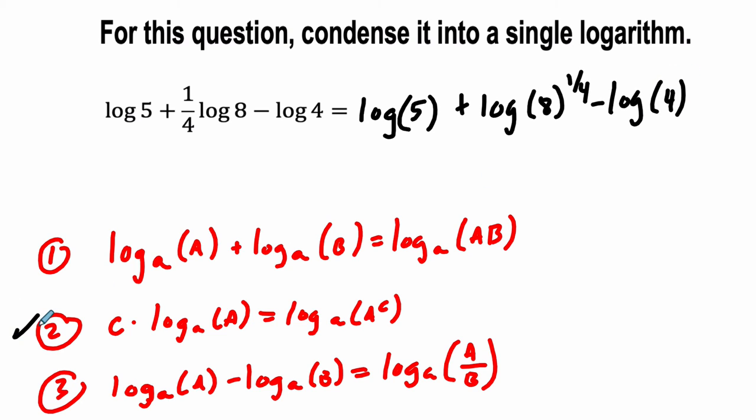So I've already applied this law right here. Now I've got to combine these two things using my first law. Log of a plus log of b equals log of a times b. So these two things can condense to the log of five times eight to the one-fourth. We still have to deal with subtracting the log of four.